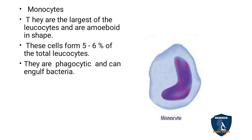Monocytes are the largest of the leukocytes and have an amoeboid shape. They form 5 to 6 percent of total leukocytes. They are phagocytic — meaning they engulf and eat bacteria when bacteria enter the body.